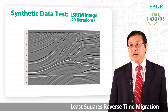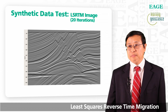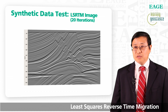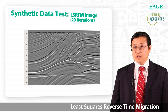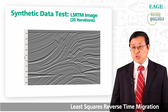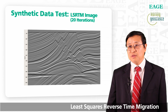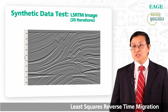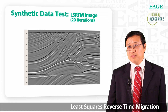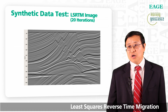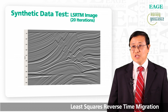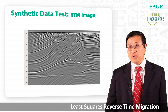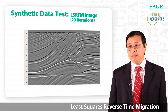Here is the least squares RTM image after 20 iterations. First, you can see the amplitude is more balanced from top to bottom and left to right, because it approaches true amplitude. Second, it gives high resolution — you can see the faults are sharper and for each layer you start to see detailed stratigraphy. Comparing regular RTM with least squares RTM, the improvement is clear.